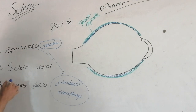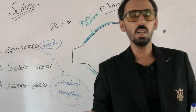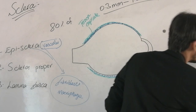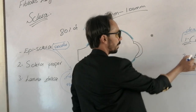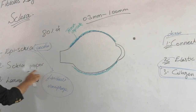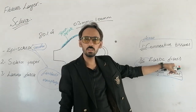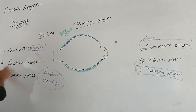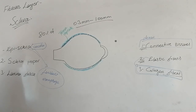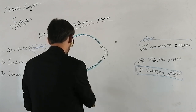The second layer is called the sclera proper, which is totally an avascular structure. It is made up of dense collagen fibers and also contains some elastic fibers. The third and last layer of the sclera is the lamina fusca.